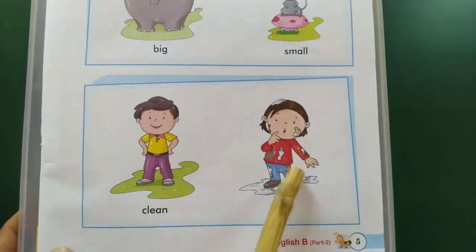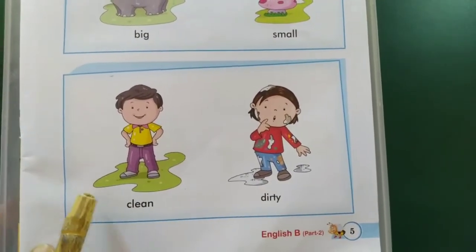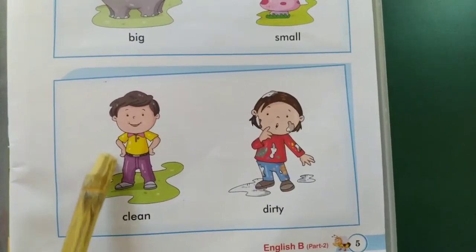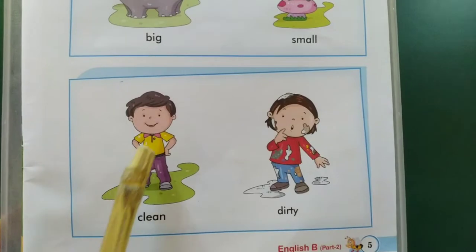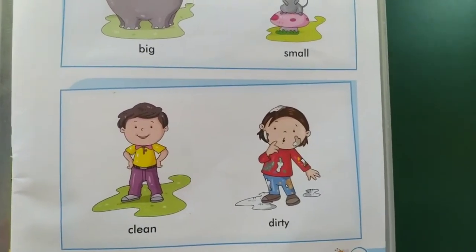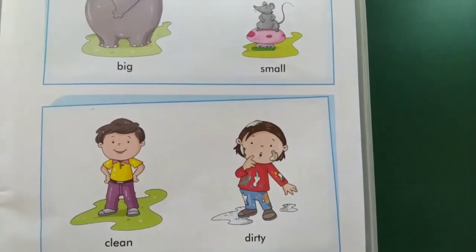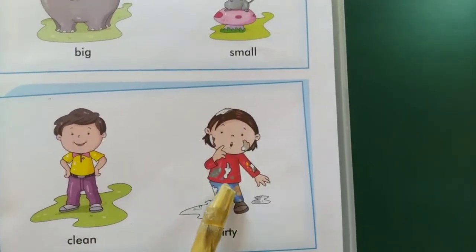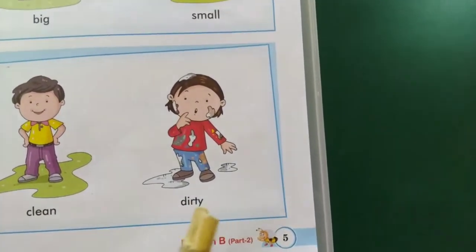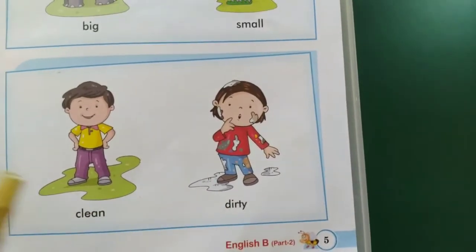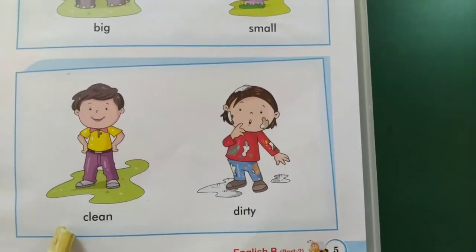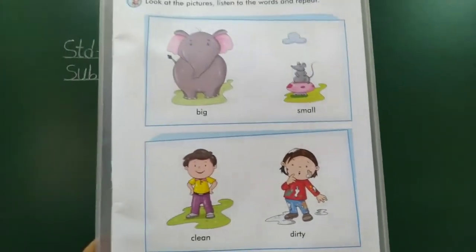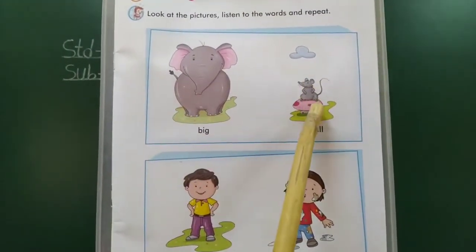Two children. Clean — clean dress. And a girl. She is dirty. Clean, dirty, clean, dirty — big, small, big. That is small.